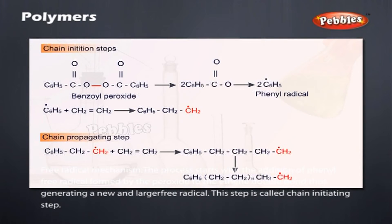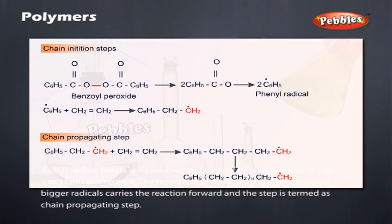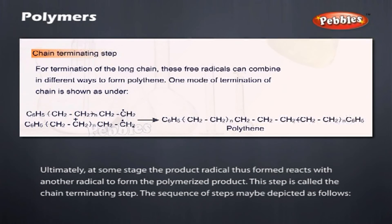Types of polymerization reactions — Free radical mechanism: The process starts with the addition of a phenyl free radical, formed by the peroxide, to the ethene double bond, thus generating a new and larger free radical. This step is called the chain initiating step. As this radical reacts with another molecule of ethene, another bigger sized radical is formed. The repetition of this sequence with new and bigger radicals carries the reaction forward, and this step is termed as the chain propagating step. Ultimately, at some stage, the product radical reacts with another radical to form the polymerized product. This step is called the chain terminating step.